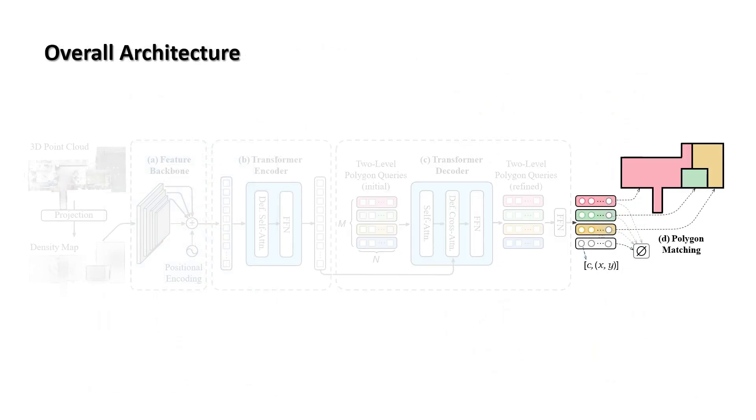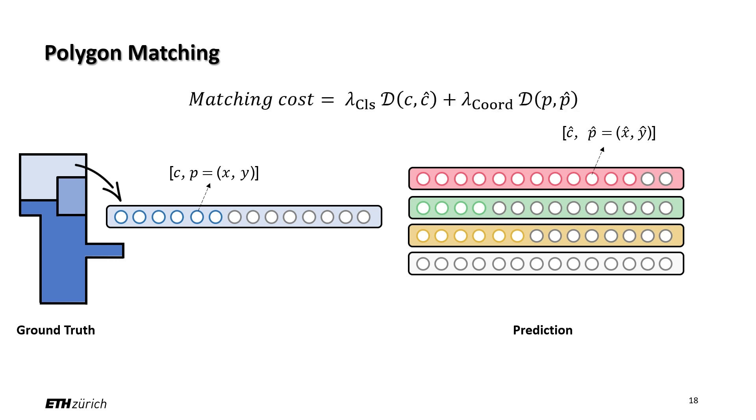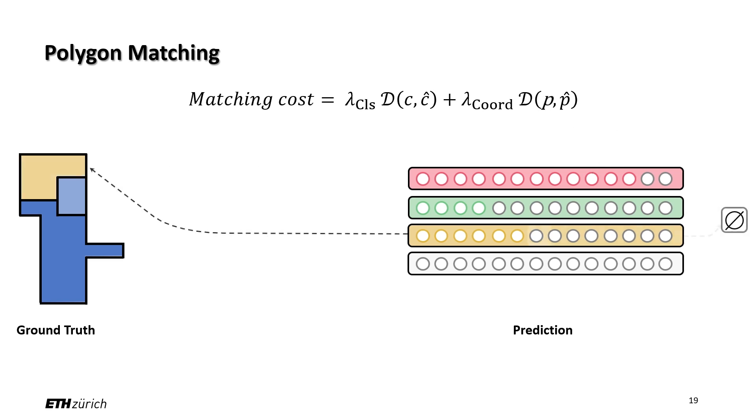Another key component is the polygon matching strategy. We first pad each ground truth polygon to have the same length as the prediction. Same as the prediction, its vertex has a binary label and a coordinate. Then, we calculate the matching cost between each ground truth polygon and the predicted polygon. The matching cost is the weighted sum of label discrepancy and vertex-wise Euclidean distance. The matching can be solved using the Hungarian algorithm. The matching establishes correspondence between predictions and targets at both polygon and vertex levels. Invalid vertices and polygons are matched to non-object.